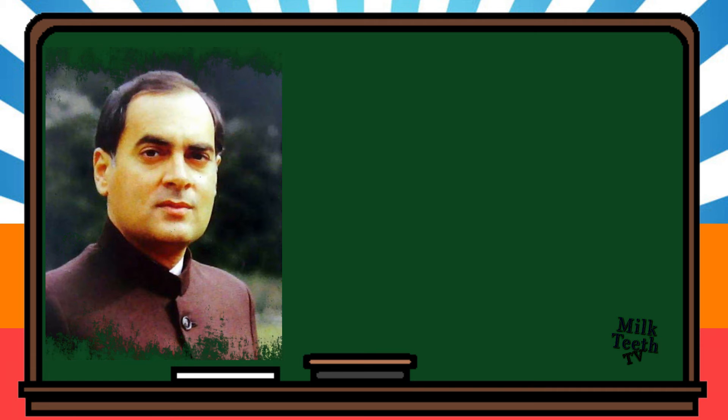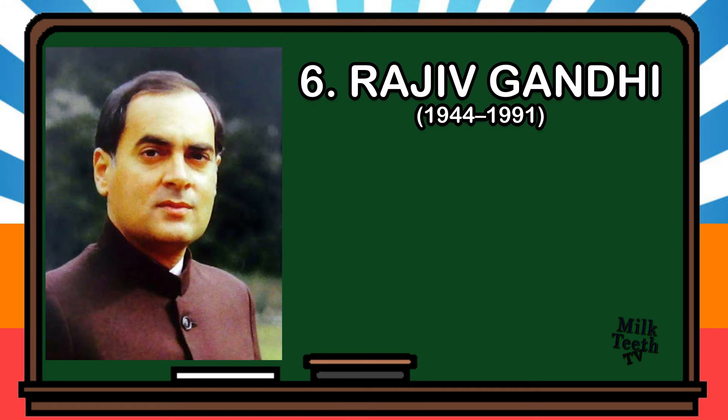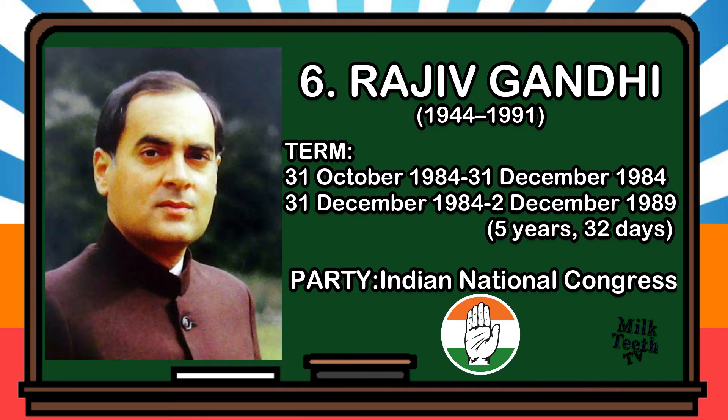The sixth Prime Minister of India was Rajiv Gandhi. He was born in 1944 and was the son of Indira Gandhi. Since the death of his mother on 31st October 1984, he became the Prime Minister of India, thereby serving India for five years and 32 days. Party: Indian National Congress.